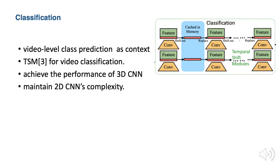Here is the video classification stage. The video-level class prediction has shown to be effective context for the temporal action detection problem. We leverage TSM for video classification. TSM proposes a generic and effective temporal shift module that enjoys both high efficiency and high performance, achieving the performance of 3D CNNs while maintaining 2D CNN complexity. TSM shifts parts of the channels along the temporal dimension, facilitating information exchange among neighboring frames. Our video classification module architecture follows TSN, but residual connections are equipped with TSM.